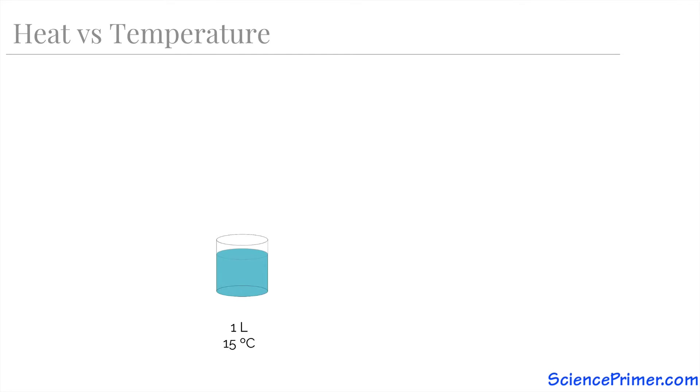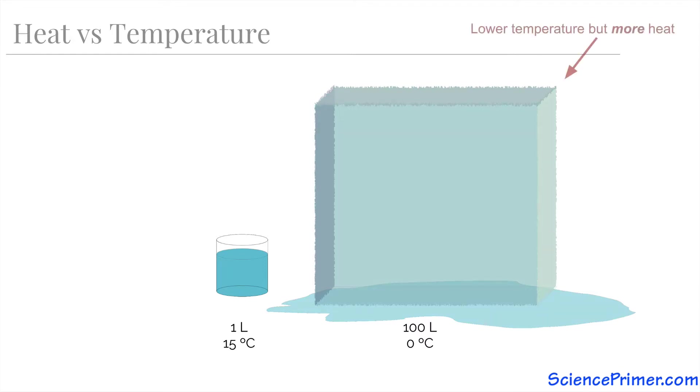Finally, we can contrast that original liter of water at 15 degrees with a 100 liter block of ice at 0 degrees. In this situation, the ice has a lower temperature, but due to the sheer number of molecules in 100 liters of water, the ice has more heat than the warmer water.